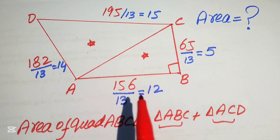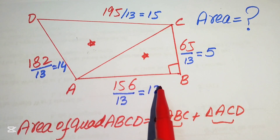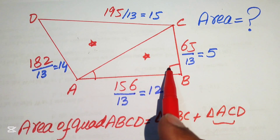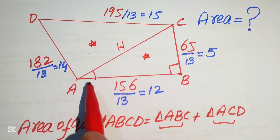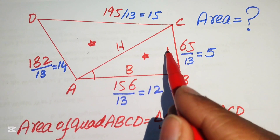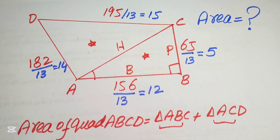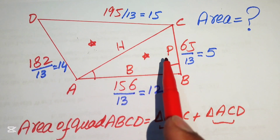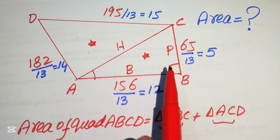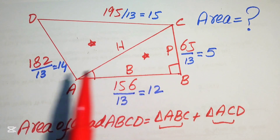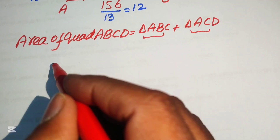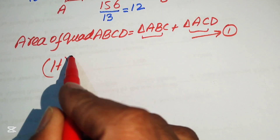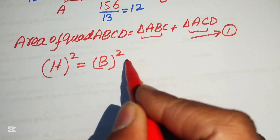We first focus on triangle ABC. This is a right triangle, so the side opposite the 90° angle is the hypotenuse, and the other two sides are the base and the perpendicular. We are given the base and the perpendicular, so we apply the Pythagorean theorem to find the hypotenuse h.